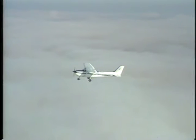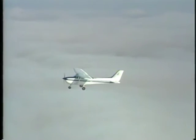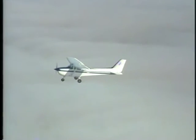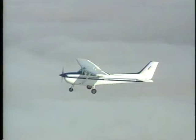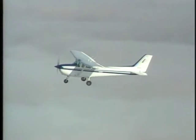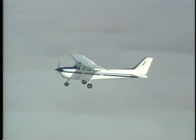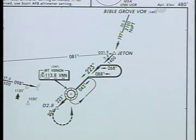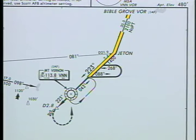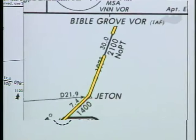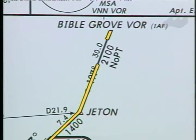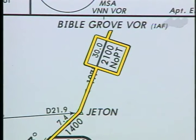Now let's turn our attention to some unique aspects of non-radar approach procedures. Without radar assistance, you must follow the charted procedure to align the aircraft with the final approach course. In some cases, your direction of arrival allows you to intercept the final approach course and proceed with a straight-in approach. When this occurs, the chart indicates 'no PT' along the route.